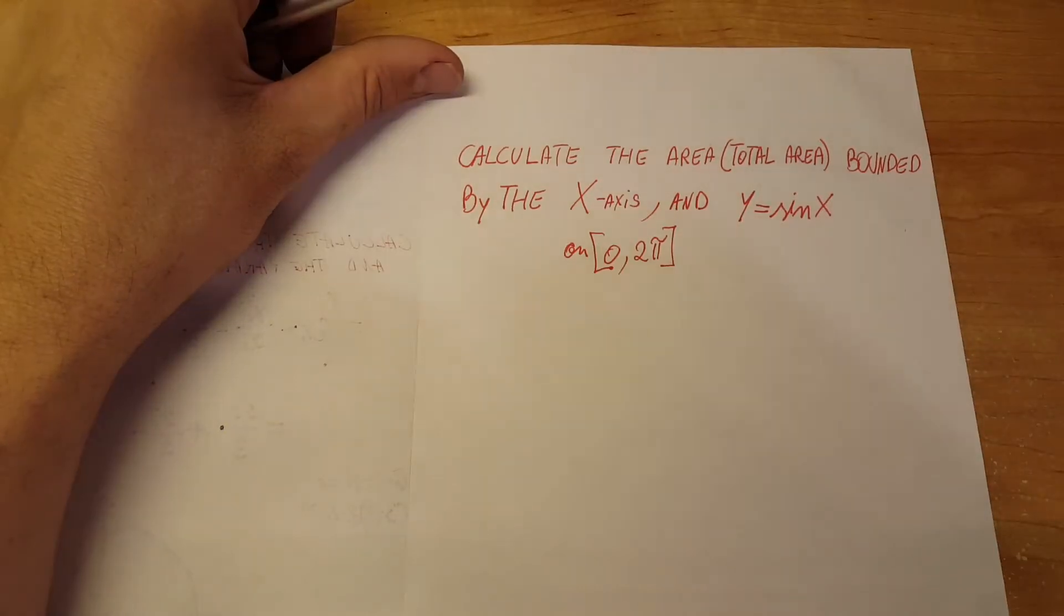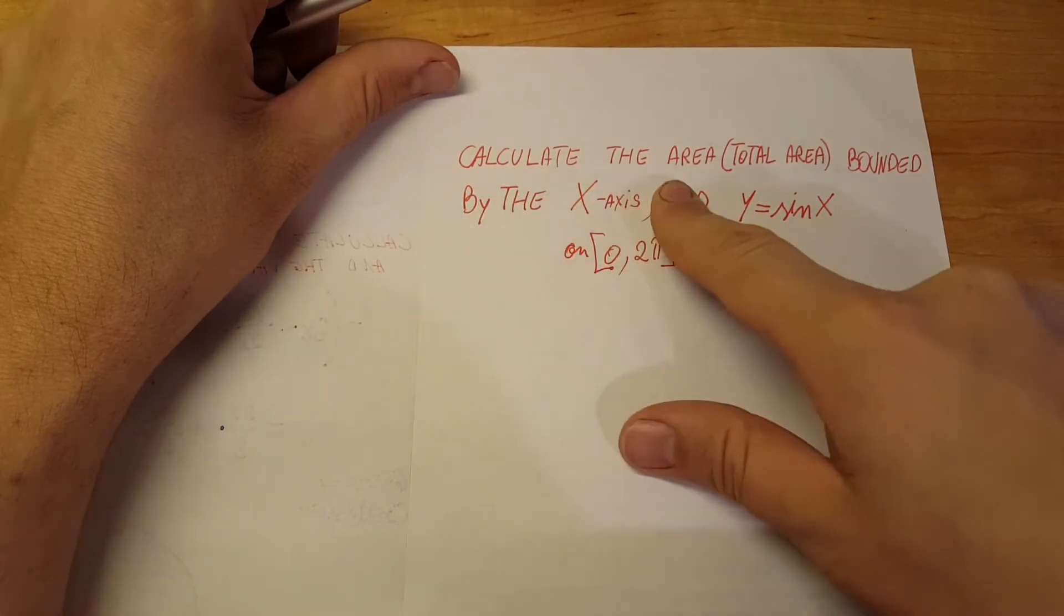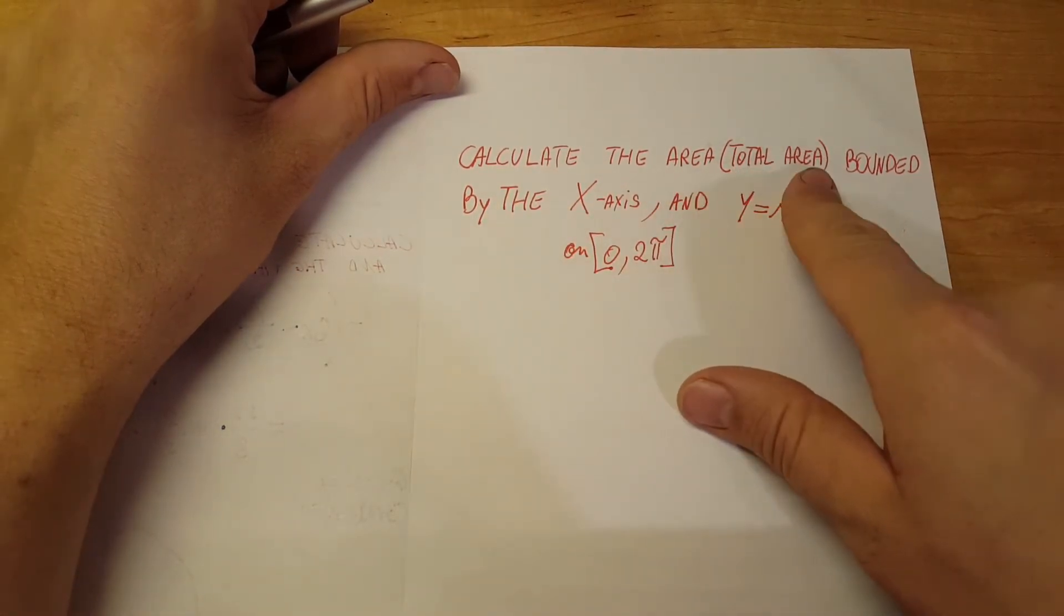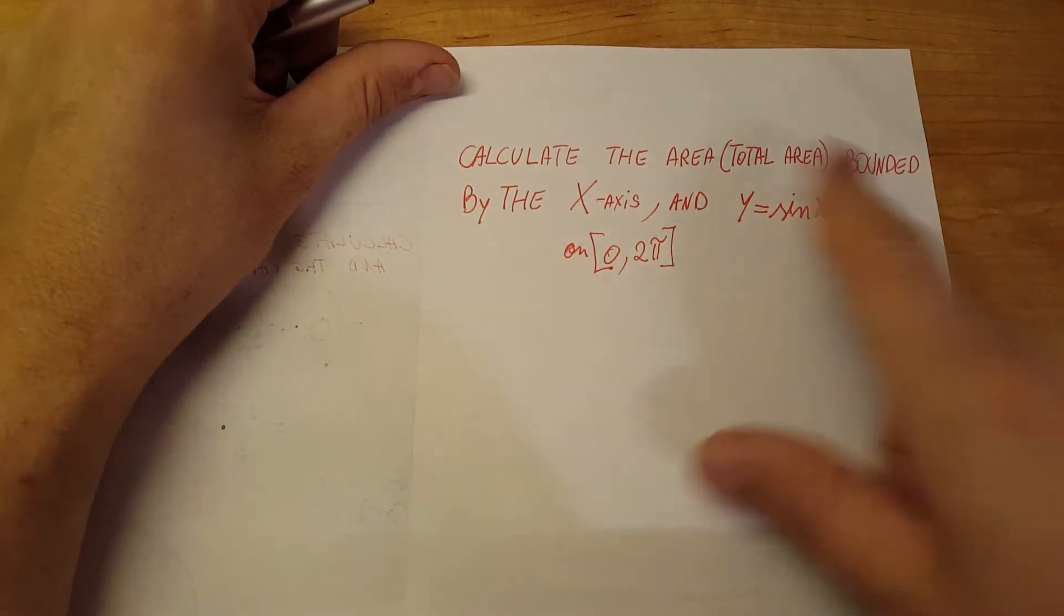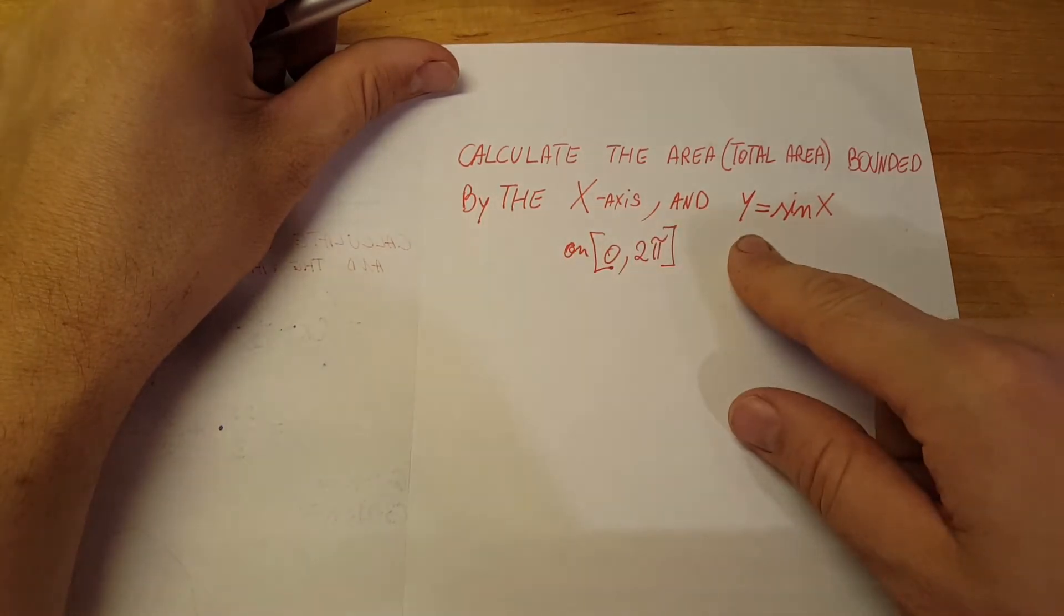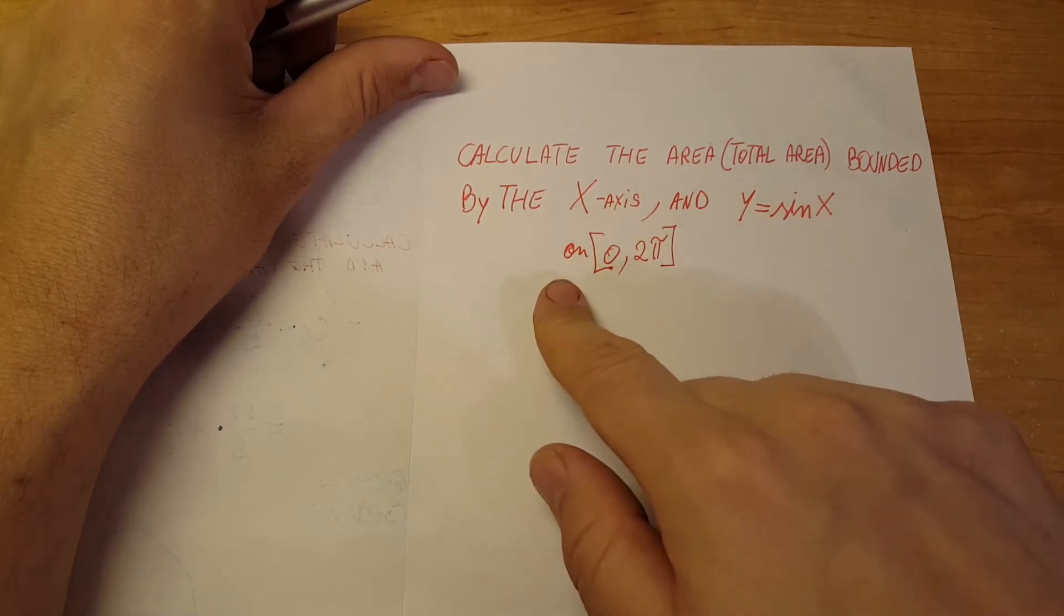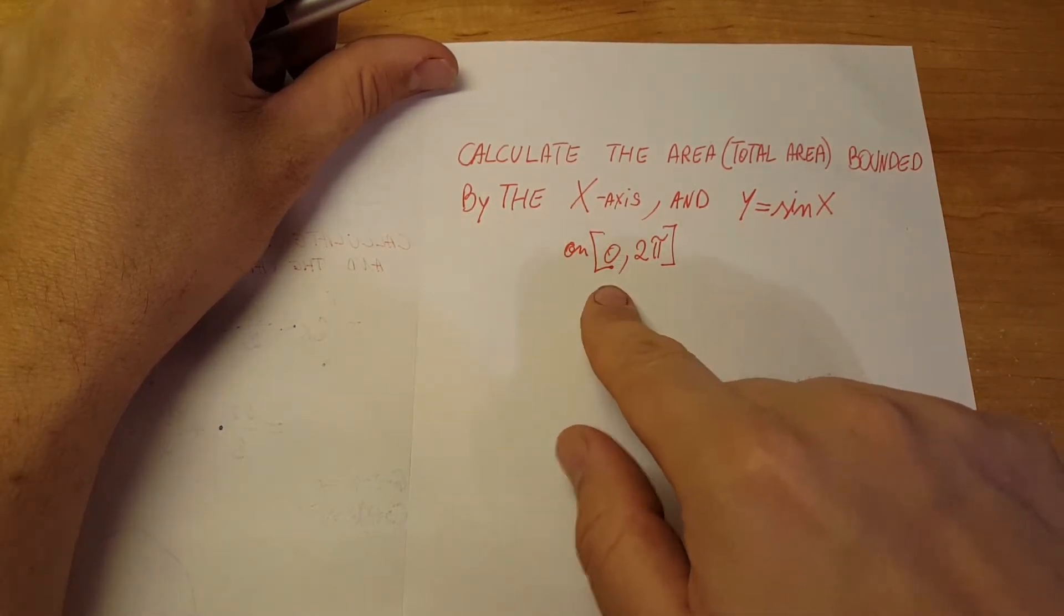So what would we do if we are told to calculate the total area bounded by the x-axis and the function y equals sine of x, between zero to two pi?